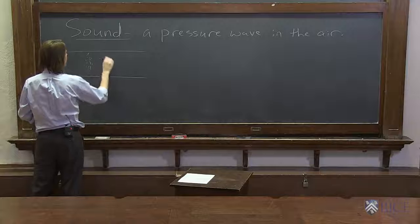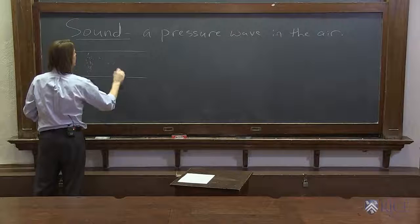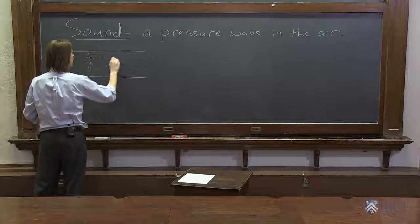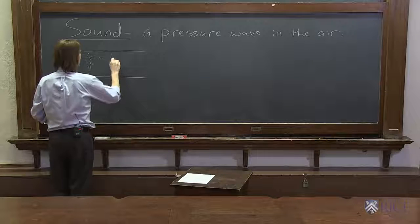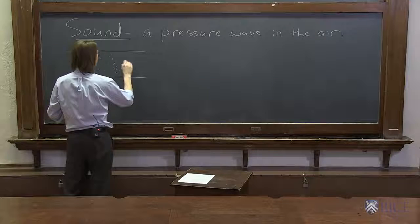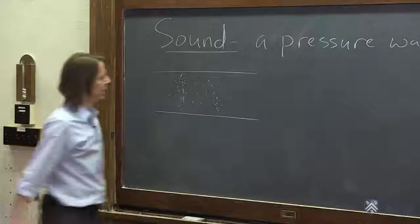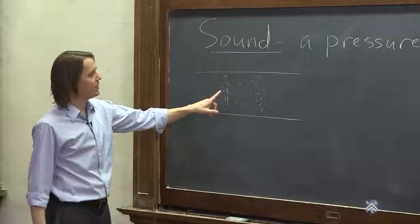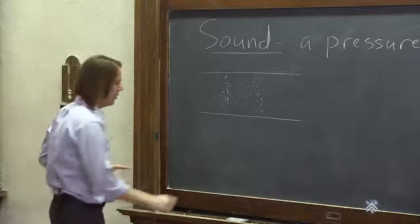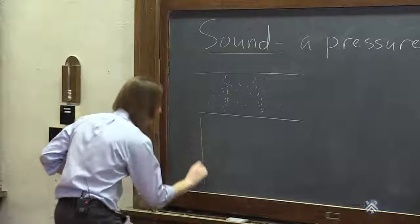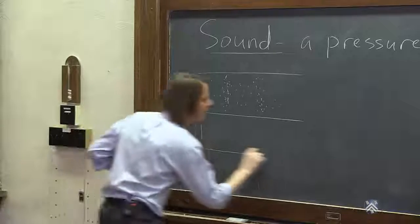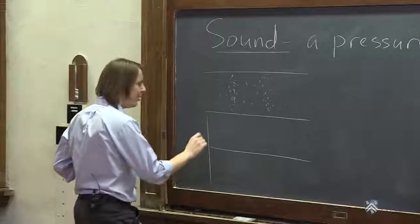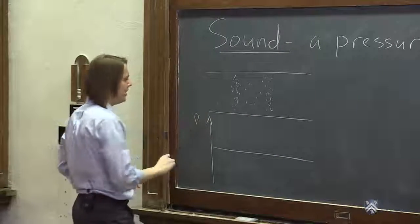And then regions where the density is low, and then regions where it's really high based on the wavelength, and then regions where it's really low. You get the idea. So these are regions of high pressure where the air density is high, regions of low pressure where it's low. If we wanted to plot it, actually the plot would kind of look like this.